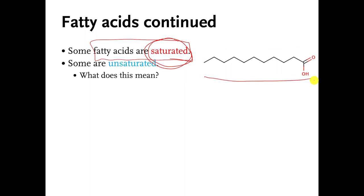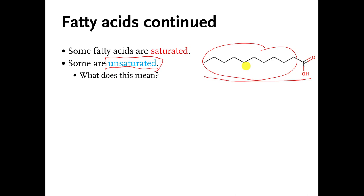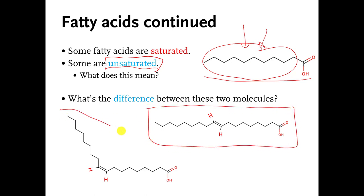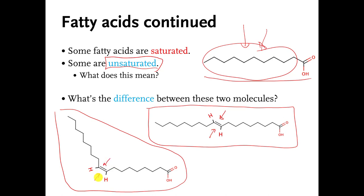There are other fatty acids that are unsaturated. That means the carbons in the tail don't have the maximum number of hydrogens because there will be at least one double or triple bond between some of the carbon atoms in the tail. Here are two examples of unsaturated fatty acids — you can see the double bond, which means you can't put as many hydrogens onto the carbons in the tail.